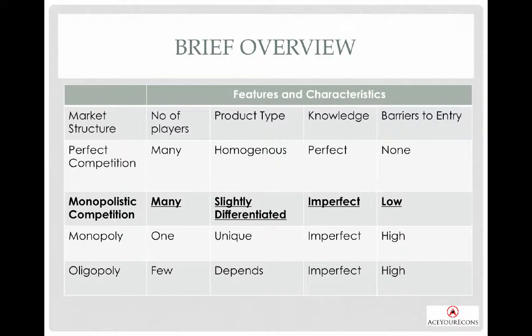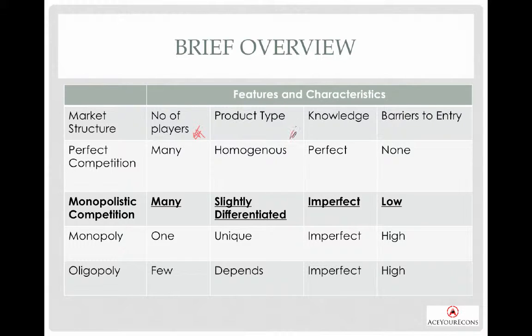This is a brief overview of the four market structures. When we talk about features, we are always talking about these four: number of players, product type, knowledge, and barriers to entry (BTE).